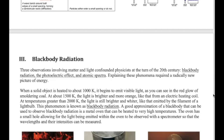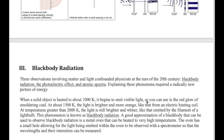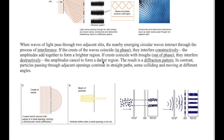Let's continue our discussion on quantum mechanics and we are going to start with the set of experiments that could not be explained by the classical theory of physics. Physicists in the early 20th century looked at particular experimental results and tried to explain and derive equations based on an assumption that the phenomenon is either particle-based or wave-based.